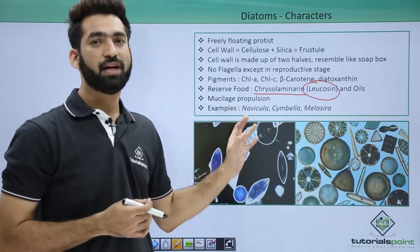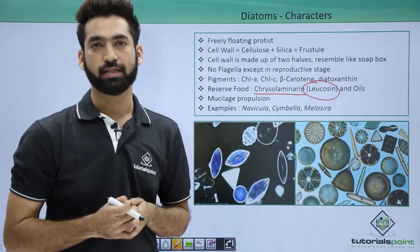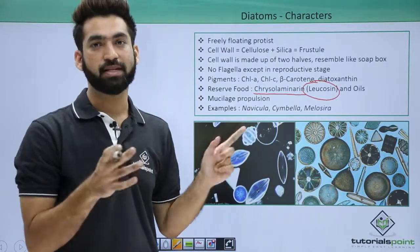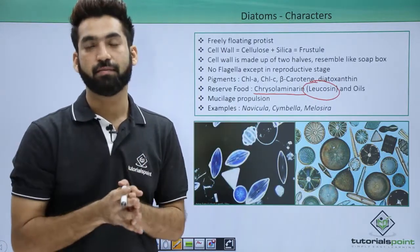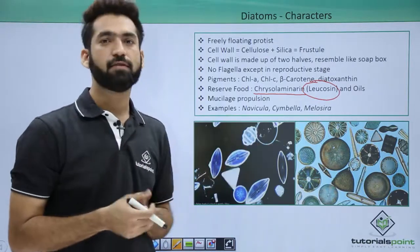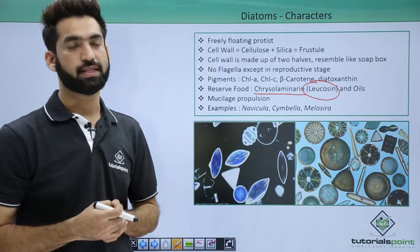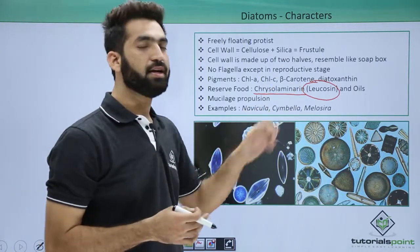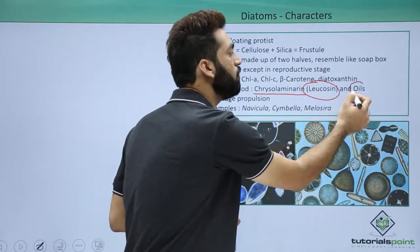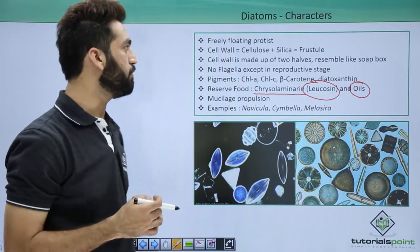Always remember that diatoms will have reserve food in the form of chrysolaminarin and leucosin. Apart from diatoms, because Chrysophyta members include desmids also, if someone asks you about the reserve food of desmids, your answer will be the same: chrysolaminarin and leucosin. Apart from chrysolaminarin or leucosin, oils are also present in the body of diatoms as reserve food.